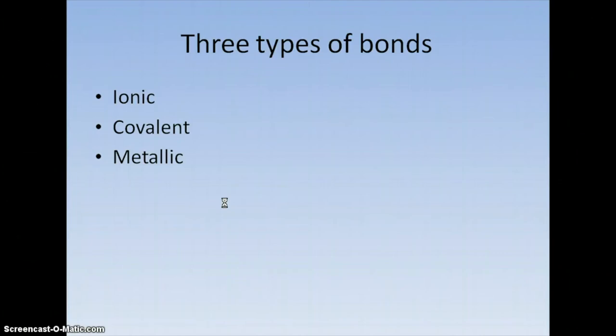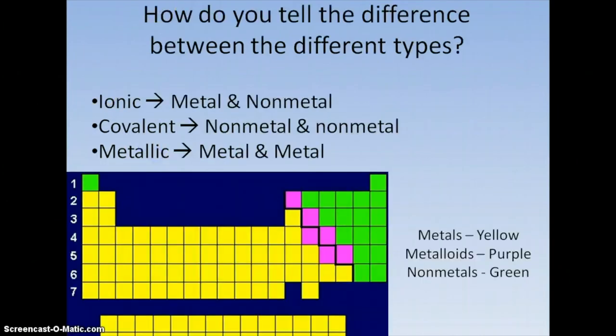There are three main types of bonds: ionic, covalent, and metallic. How do you tell the difference between them? The first way is to look at what types of elements are involved. On the periodic table here, metals are yellow, nonmetals are green, and metalloids are purple.